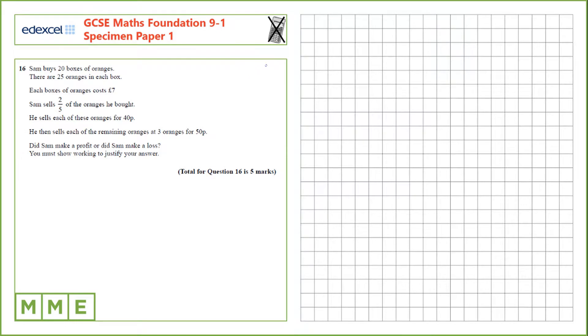Question 16. Sam buys 20 boxes of oranges and there are 25 oranges in each box. Each box of oranges costs £7 and he sells 2 fifths of the oranges he bought. He then sells those for 40 pence each and sells the remaining oranges at 3 oranges for 50 pence. We need to work out whether he made a profit or a loss and show our working.